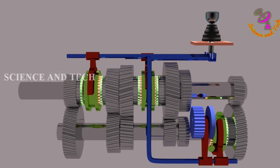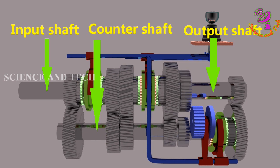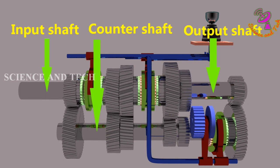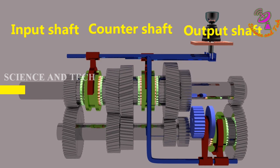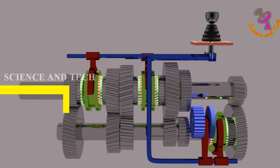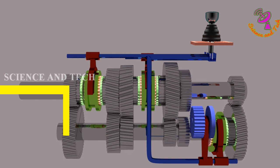In gear structure there are three different types of shafts. They are input shaft, counter shaft and output shaft. Input shaft is transmitting engine rotation to counter shaft and counter shaft is transmitting to output shaft.